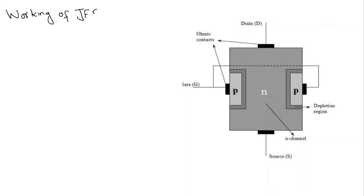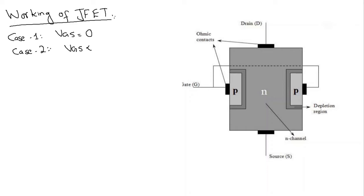In this video we are going to discuss the working of the junction field effect transistor — that is, the working of the JFET. I have divided the working of the JFET into two cases. Case number one is where VGS, the voltage between gate and source, is equal to zero volts. In case number two, VGS is some negative value, meaning VGS is less than zero volts.